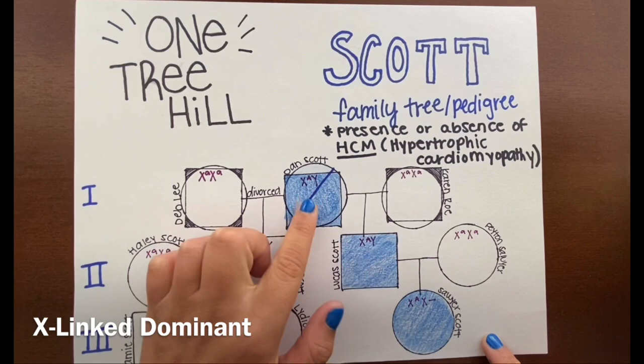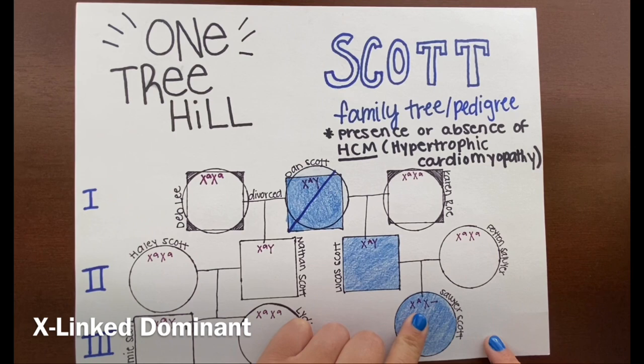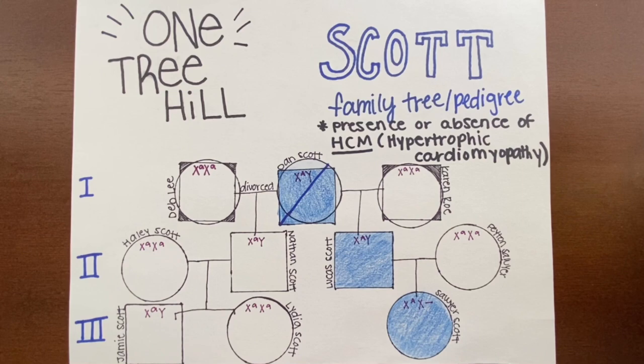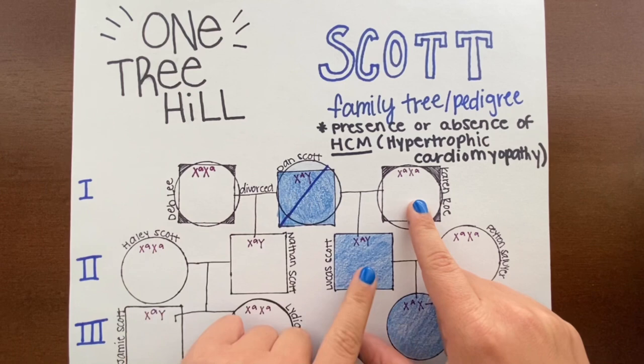All the females who did have it had to have at least one big A, but we didn't know the second allele. And all of the males who didn't have it had X little a, Y. After making Punnett squares to test this mode of inheritance, I found that it does not work for this pedigree because a cross between Dan Scott and Karen Rowe would not be able to result in the genotype of Lucas Scott.